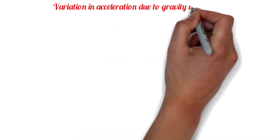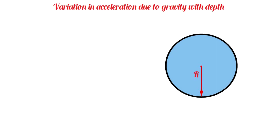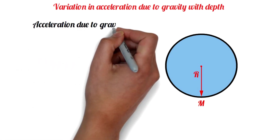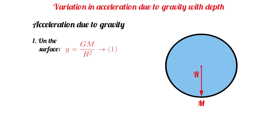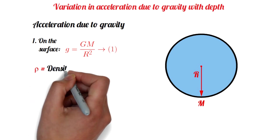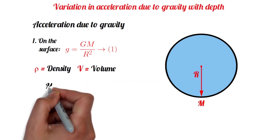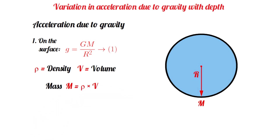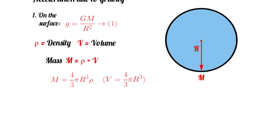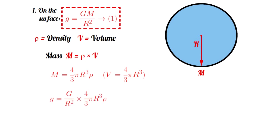Variation in acceleration due to gravity with depth. Again let the Earth be a sphere of radius R and mass M. We know the acceleration due to gravity on the surface of the Earth is g is equal to GM by R square. If rho is the density of the Earth and V is the volume of the Earth, then the mass of the Earth capital M is equal to rho into V. We know V is equal to 4 by 3 pi R cube. Therefore capital M is equal to 4 by 3 pi R cube rho. Now substituting the value of M in equation number 1, we get small g is equal to G by R square into 4 by 3 pi R cube rho. By solving this equation we get g is equal to 4 by 3 pi R rho G.